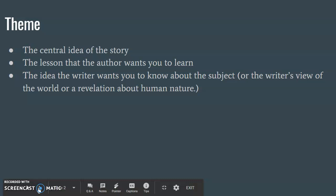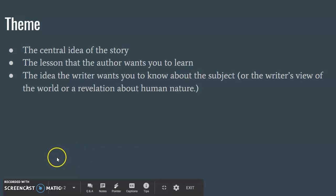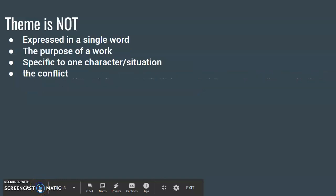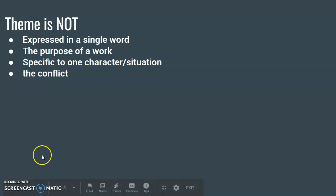First of all, let's look at the definition. Theme is the central idea of the story — not the plot, but the lesson that the author wants you to learn after reading the story. Think about what they want you to know, what their view is of the world, or what they want you to discover about human nature in general. Theme is never expressed in a single word. Sometimes people say the theme of the story is 'love,' but that's actually a subject. Theme is not the purpose of the work, not specific to one character or situation, and certainly not the conflict. It is the lesson that we want you to learn.